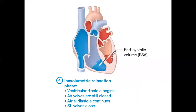Step four is isovolumetric relaxation — this is diastole. The ventricles are relaxing and the volume doesn't change at this point. All of the valves are closed, so blood is not moving in any direction. This is the last stage, right before the filling phase. After step four, the cardiac cycle starts again at step one — the filling phase.